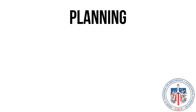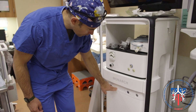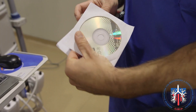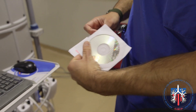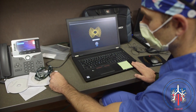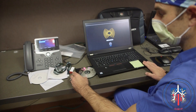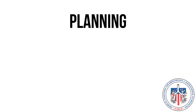The first step in preparing for the procedure is to create a plan for navigation to the nodule. This can be done on the robotic tower by inserting the DVD with patient images into the DVD drive. It can also be accomplished by inserting the DVD into the provided laptop. In this video, I am using the laptop for planning.